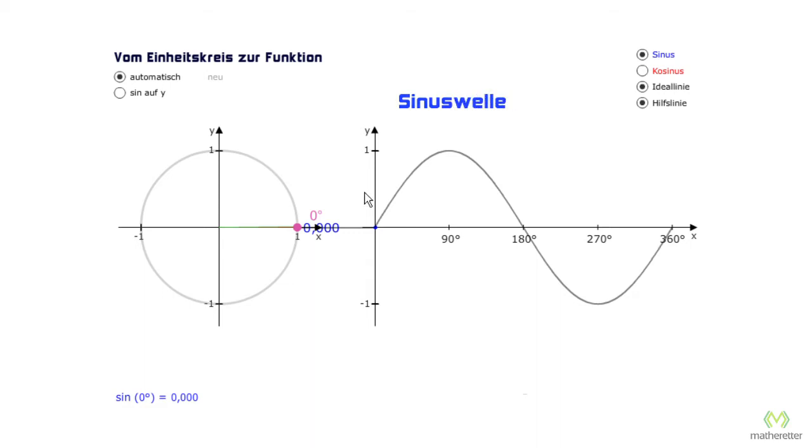We no longer need to use the unit circle to find the sine values, because we can get the sine values right here by reading the graph. So if someone asks us for sine of 90 degrees, and we have the graph in front of us, then we look at 90 degrees. Look up here and see, the sine value is 1.